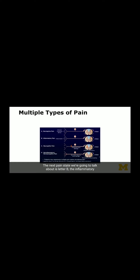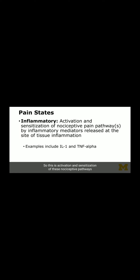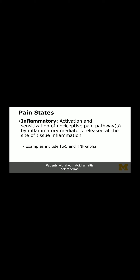The inflammatory pain state is where inflammatory markers come in and irritate those nerves. This is activation and sensitization of nociceptive pathways by inflammatory mediators that cause tissue inflammation. We encounter patients with this every day. Patients with rheumatoid arthritis, scleroderma, and lupus can all have tissue pain secondary to these inflammatory mediators activating those nerves.